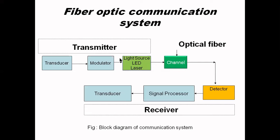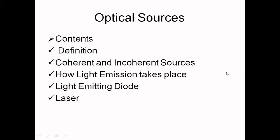My today's topic is about light sources, which is the last block of the transmitter section. There are basically two light sources available — one is light emitting diodes and another is laser — which are mostly used in optical communication systems. Before this light source, the information will be in the form of electrical signals, and this source will convert those electrical signals into light so that it can be fed to the optical fiber.